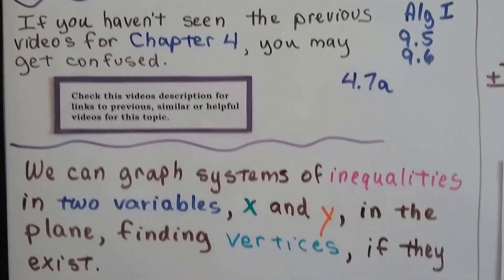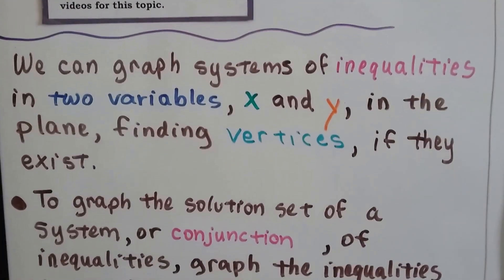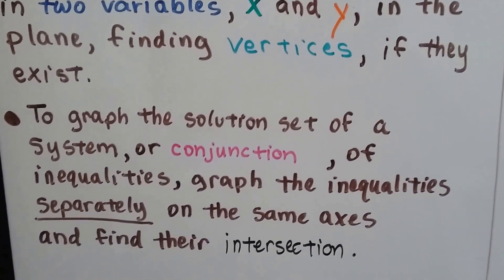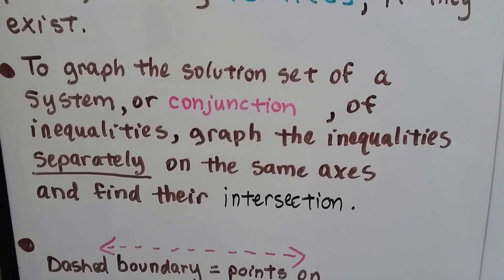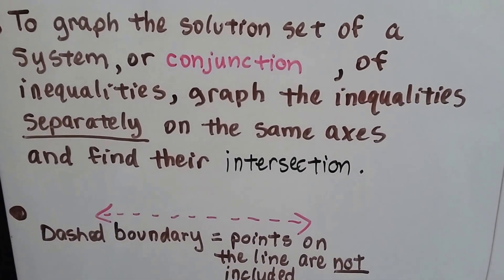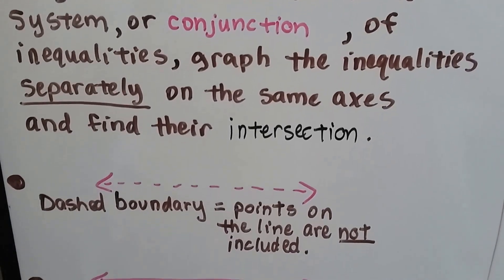We can graph systems of inequalities into variables, x and y, in the plane, finding vertices if they exist. To graph the solution set of a system or a conjunction of inequalities, graph the inequalities separately on the same axis and find their intersection.